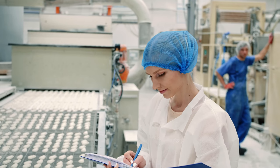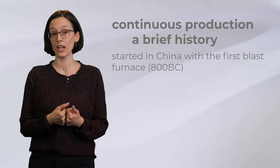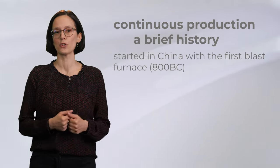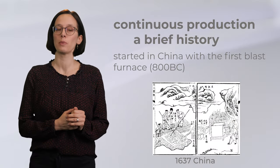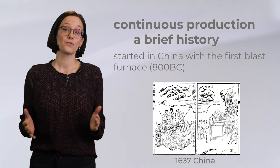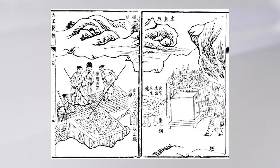Before going into the technical details, let's take a brief look at continuous production and its history. Continuous production is something that we have known as humans for a long time. History reports that in China 800 BC the first continuous production of iron was carried out in the continuous blast furnace. That's a very long time ago. Here you can see a picture of a 1637 blast furnace in China.